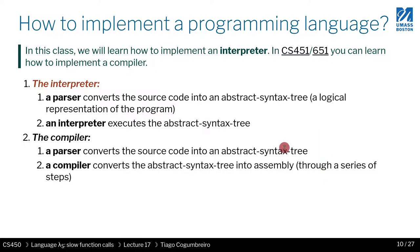So how does one implement a programming language? There are basically two ways of doing it. One is the interpreter, which is what you learn here in course 450. The other way is the compiler. What the interpreter is doing is it will execute the language as-is — the way you give meaning to a program is by executing it.